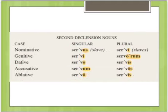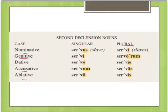The second declension has the same cases — nominative, genitive, dative, accusative, ablative, singular and plural — but it has a different set of endings: us, i, o, um, o, i, orum, is, os, is. Most nouns in the second declension will follow this pattern. These are another set of endings that you'll have to memorize.